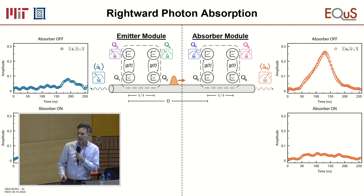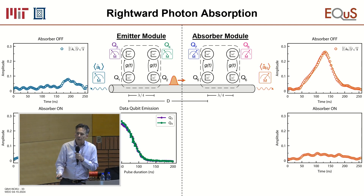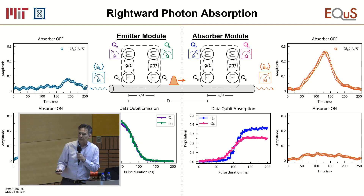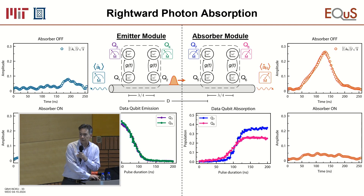Looking at the qubits themselves: we measure qubits three and four and see them decaying — they start at roughly 50% each in the entangled state and both decay to zero, corresponding to photon emission. On the right, qubits seven and eight absorb the photon and gain population. Ideally these should be the same but they're a little off. This measurement doesn't prove they're entangled, but it shows the system is working.